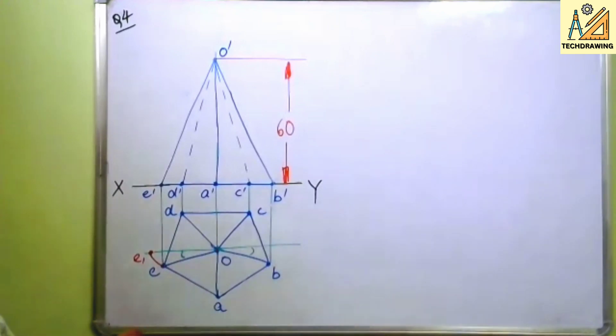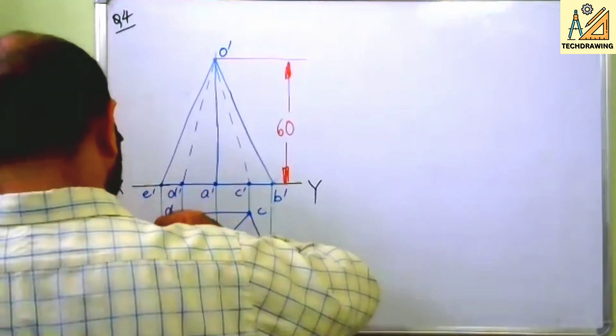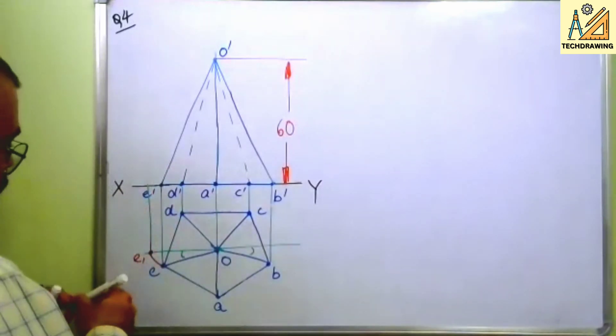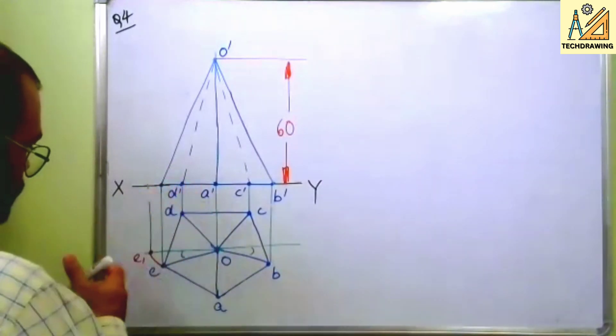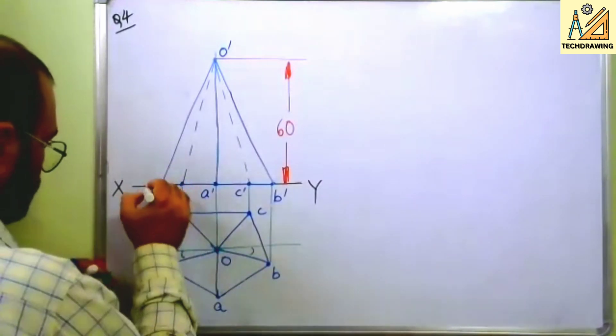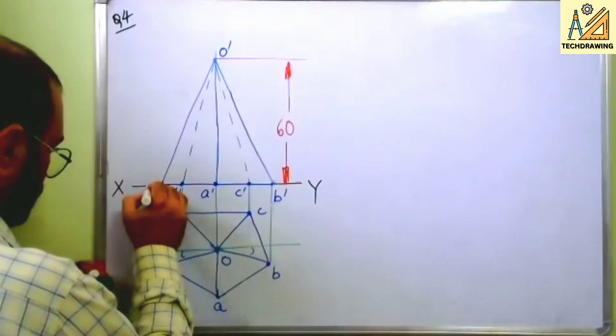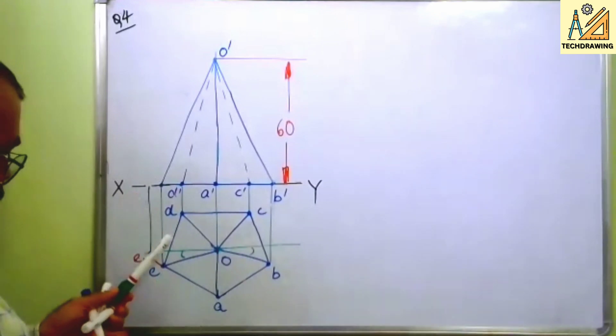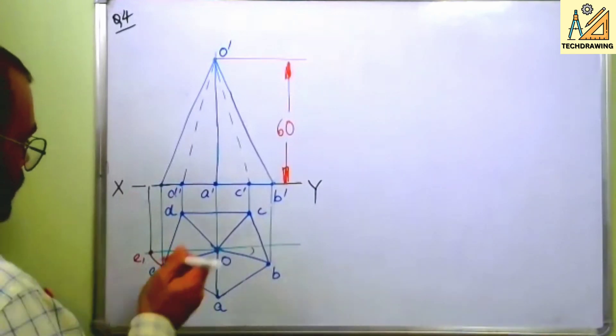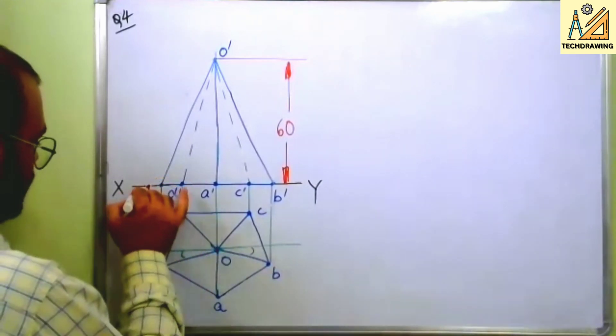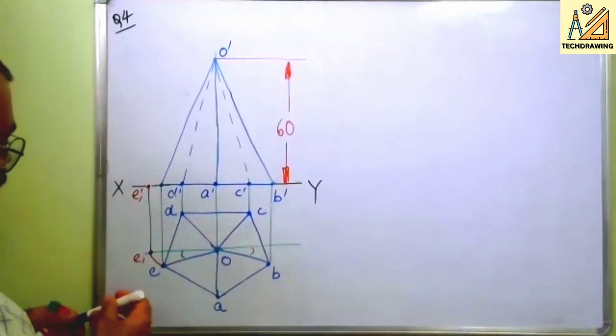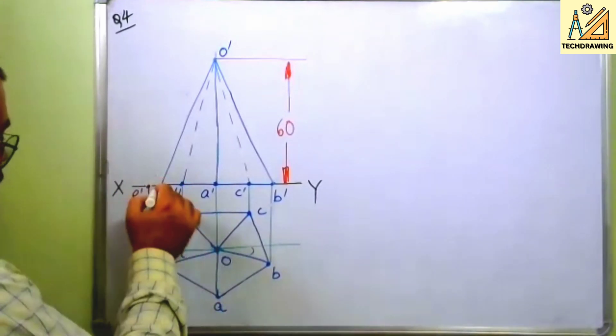Draw the projection line like this. This will be E1 dash and this is E dash. After this you have got this point.